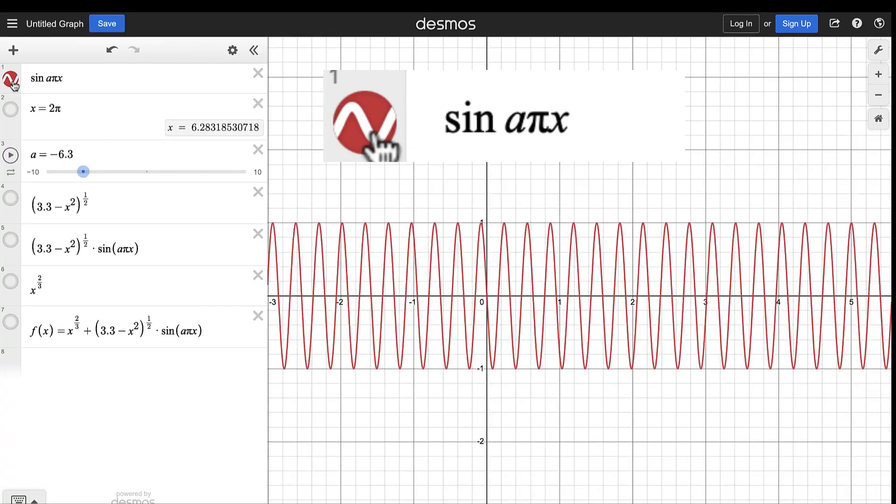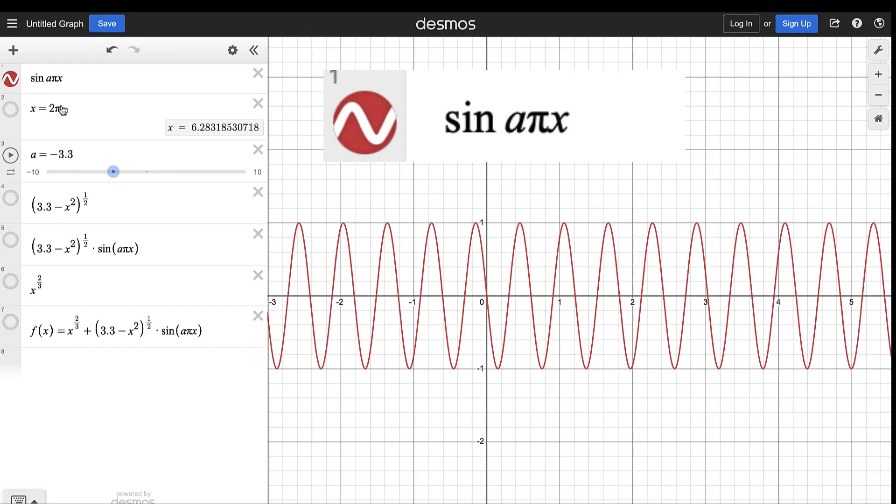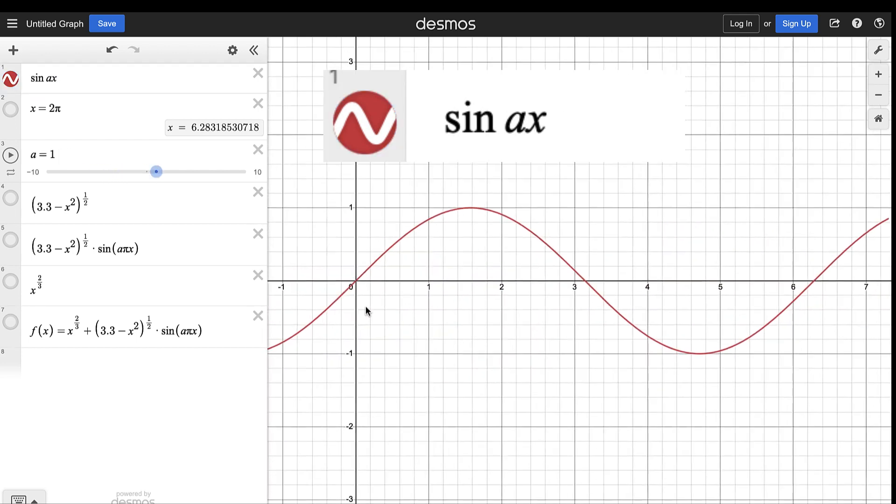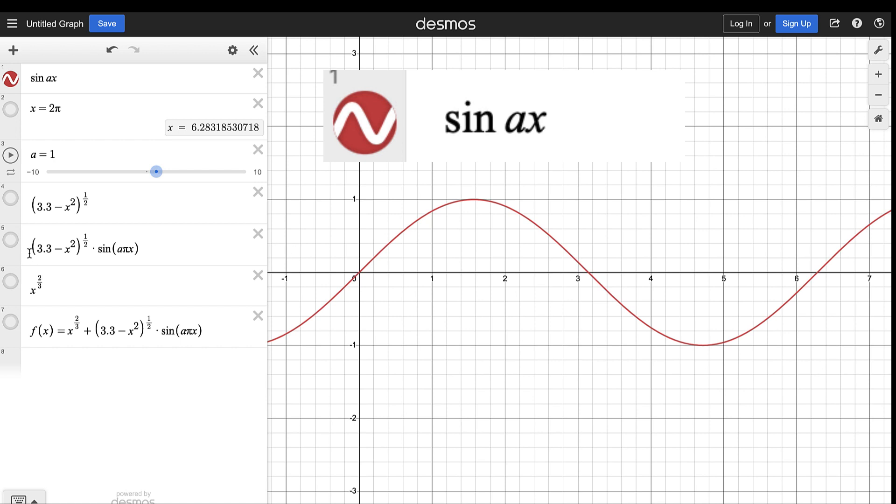The first thing that we are going to do is graph sine ax. Let's start with a equals positive one. So here's the graph at a equals positive one. Now we said that the number of cycles for the period of 2π is the frequency of the graph. So from zero to about 6.24, that is from zero to 2π, we have one cycle here.